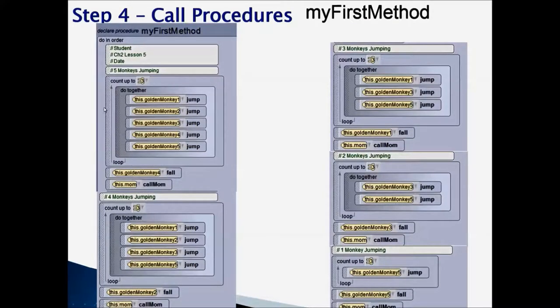So you will see this is my 5 monkeys jump and then this is my 4 monkeys jump. This is my 3 monkeys jump. This is my 2 monkeys jump. And the last one is 1 monkey jump. So that means I am doing the same thing over and over again. So I can just copy and paste it and just remove one jump from here, whichever monkey jumped off.